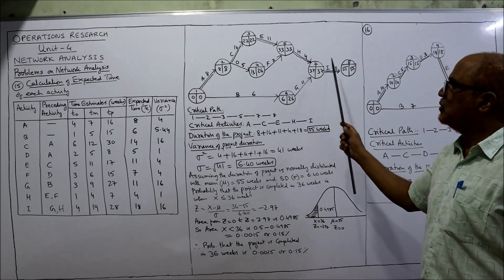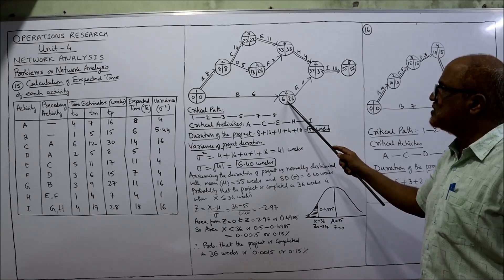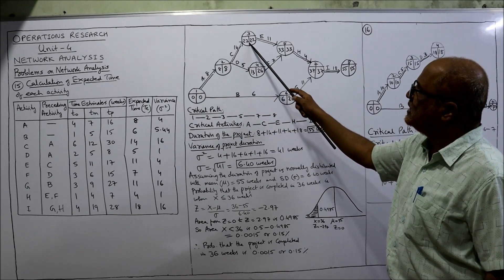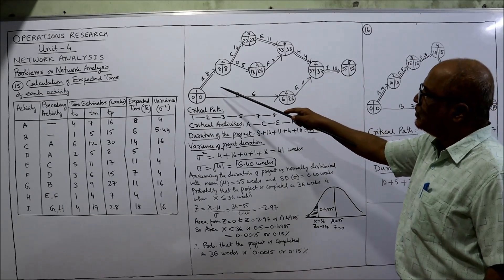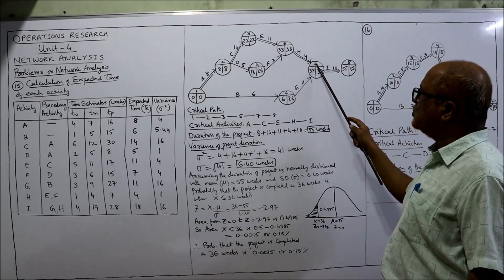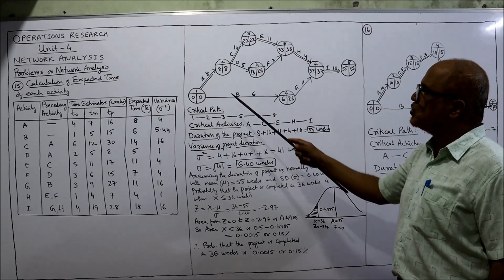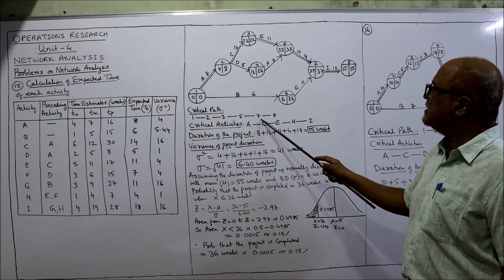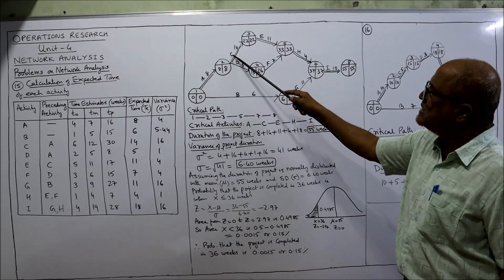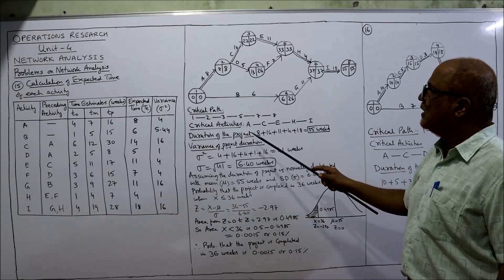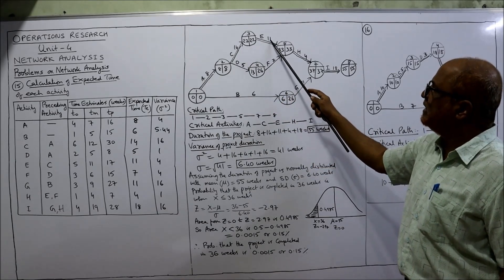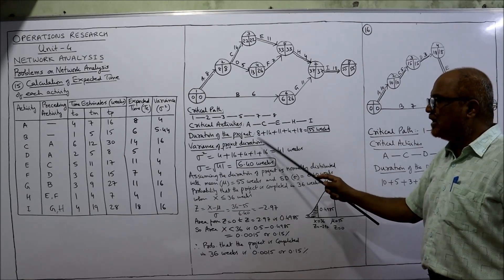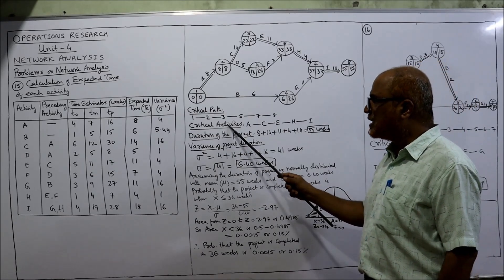The critical path is the longest path from the first event to the last event where EST and LFT values are equal. Event with EST = 6 and LFT = 26 — not same, not critical. Event with EST = 13 and LFT = 26 — not same, not critical. The critical path goes through events: 1 → 2 → 3 → 5 → 7 → 8. Critical activities are A, C, E, H, I. Duration of the project: 8 + 14 + 11 + 4 + 18 = 55 weeks.